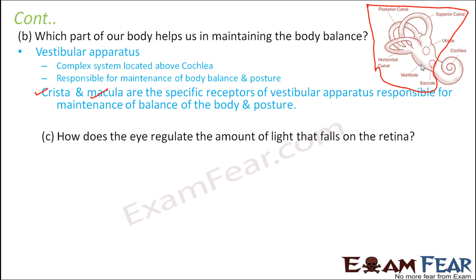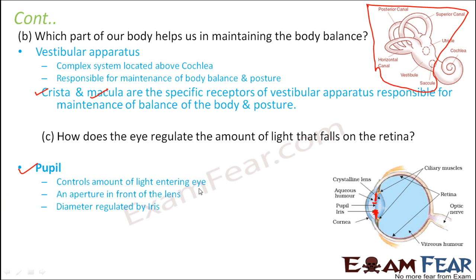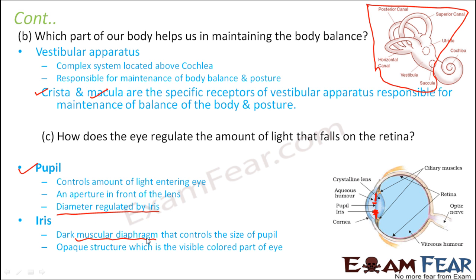How does the eye regulate the amount of light that falls on the retina? It is very important that neither too much nor too little light should enter the eye. This is controlled by the tiny hole called the pupil. The diameter of the pupil is controlled by the muscular diaphragm called the iris, which surrounds the pupil. The pupil controls the amount of light entering the eye — it is an aperture in front of the lens. The iris, being a muscular diaphragm, can contract or expand: when the muscles are closer together the pupil diameter is smaller; when they are farther apart the pupil diameter is larger — thereby regulating the amount of light that falls on the retina.